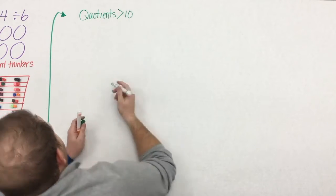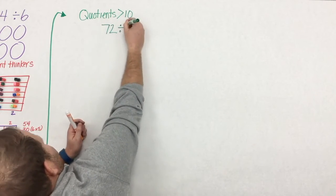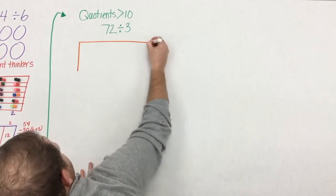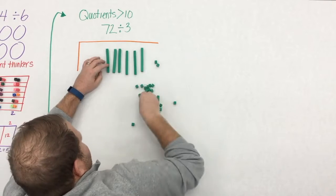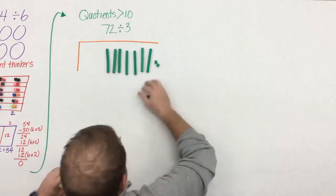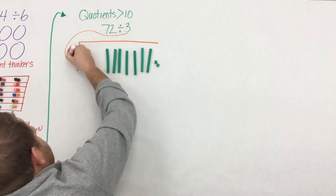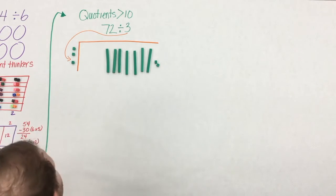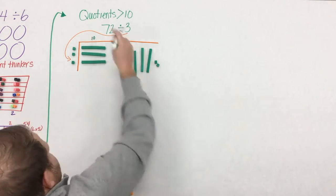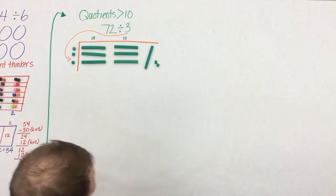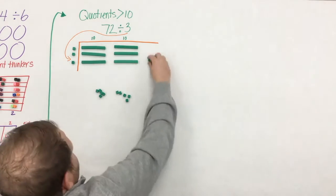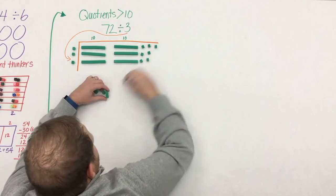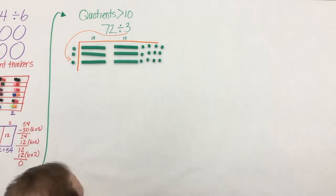As students begin to explore again in third grade, they deal with quotients which are greater than 10. Here students might begin to explore the idea of division with base 10 blocks. So they'll start with 72, and instead of putting it into three groups, they'll put it into three rows. They'll start by placing 10 in each row, then 10 in each row, and then they have that 10. And in order to place it in each row, they need to decompose it. Make a fair trade.